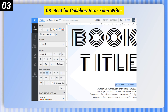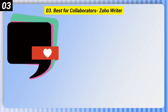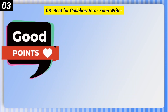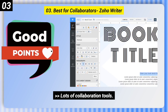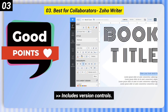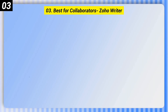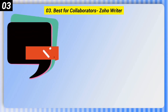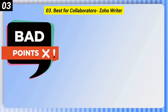Number 3, best for Collaborators: Zoho Writer. Good points include lots of collaboration tools, accessible offline, and includes version controls.